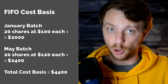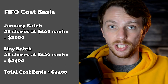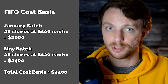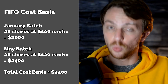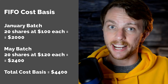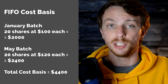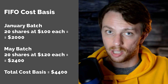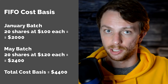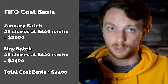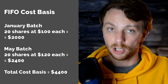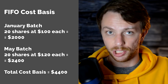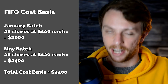Using FIFO, you take your first 20 shares bought in January for $100 each, giving you $2,000. Then you take 20 more shares from the second batch bought in May at $120, giving you $2,400. So your total cost basis using the FIFO method would be $2,000 plus $2,400, which equals $4,400.